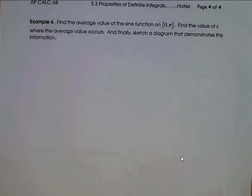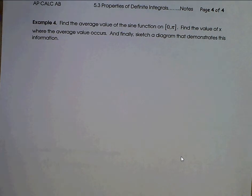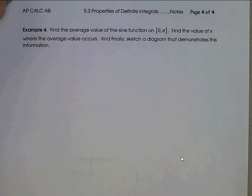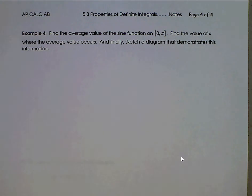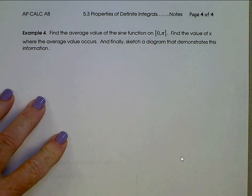AB Calculus, section 5.3, page 4 of 4. Last problem here for this section. We are going to find the average value of the sine function on the interval from 0 to pi, find the value of x where that average value occurs, and finally sketch a diagram that demonstrates this information.